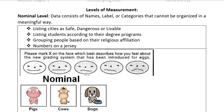The nominal level is the weakest of all the categories. It consists of names, labels, or categories that really can't be organized in a meaningful way. If you categorize cities as safe, dangerous, or livable, or you list people according to their degree program or religious affiliation, even numbers on a jersey.